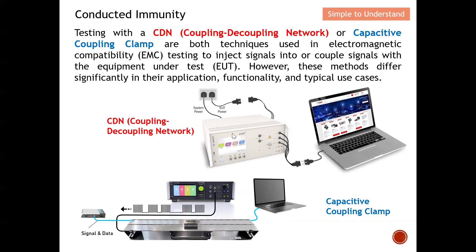The first figure shows the CDN method. You can see there are actually two power sources: one to power up the CDN itself, and the second to power up the EUT. From here we set the noise source that will be injected into the EUT's power supply, and we ensure that the EM wave propagates in one direction only. When the EUT receives the disturbance, we observe whether it can still function. The second method is through the clamp.